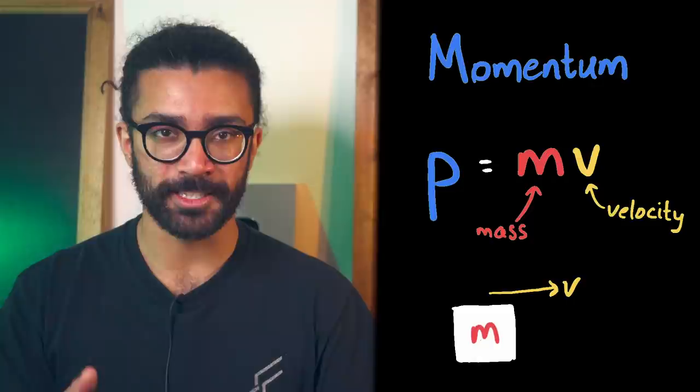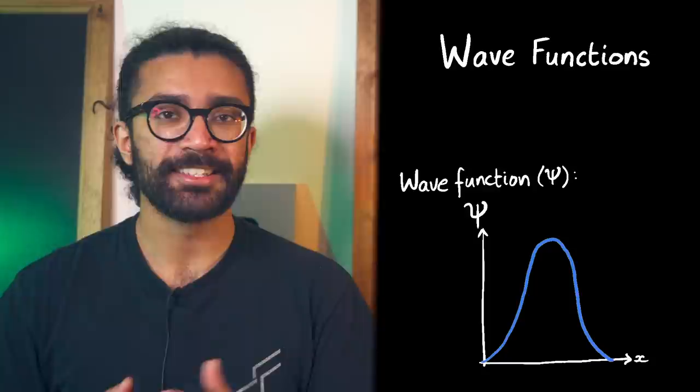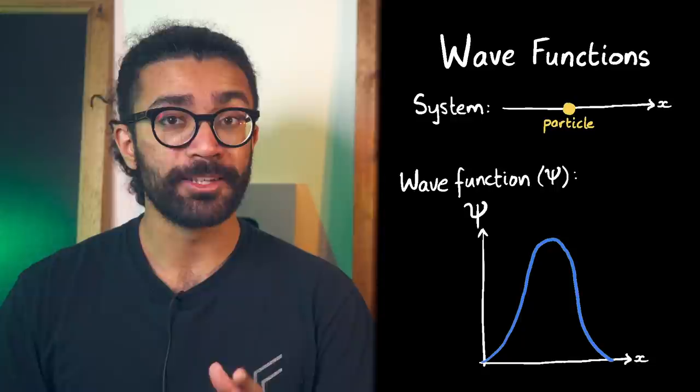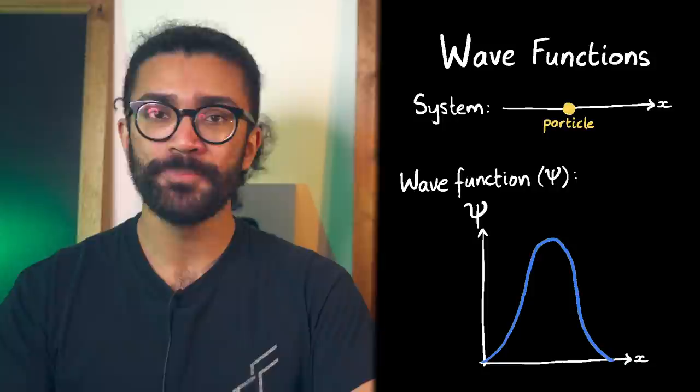After all, in this theory we deal with wave functions. These are essentially mathematical functions that contain all the information we can know about our system. For example, our system could be a particle, such as an electron, and we could find the wave function of the electron, which would tell us about the probability of us finding our electron at different points in space.